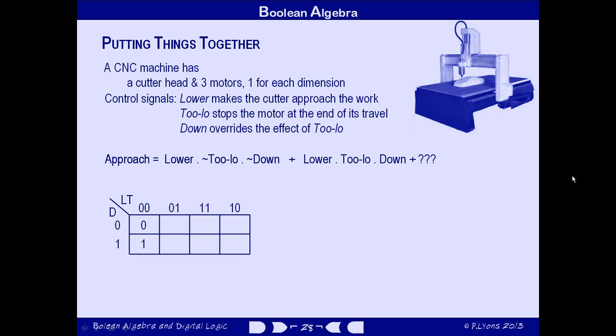And if the program does not want to lower the cutter, the cutter is not too low, and the operator presses the down button, well, I guess the operator knows best. So let's make the cutter approach the workpiece. Now the situation when the cutter is not being lowered, it is too low, and the operator does not want to defeat the limit switch. Clearly we do not want it to approach the workpiece. But if the program doesn't want to lower it, and it is too low, and the operator wants it to move further downwards, then that should be allowed to happen. In fact, when you think about it, whenever the operator wants to move the cutter downwards, the system should make that happen. So let's abandon our systematic approach and fill in the other two cells in the bottom row of the Karnaugh map.